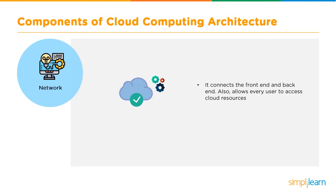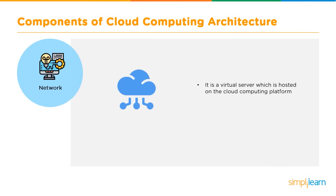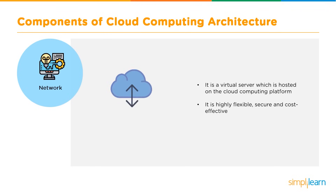The network component connects the front-end and back-end together. It can be the internal private network of a cloud computing provider as well as the public network, and it allows every user to access cloud resources over the internet. It helps users connect and customize routes and protocols — for example, an admin can block specific IPs. It is a virtual server hosted on the cloud computing architecture, highly flexible, secure, cost effective, and the backbone for connecting multiple services together.